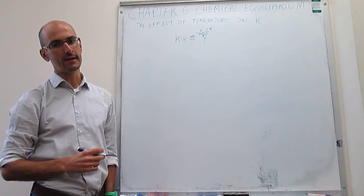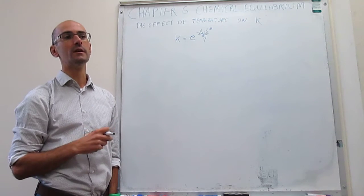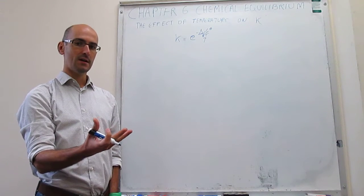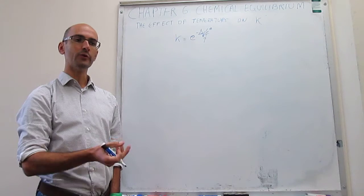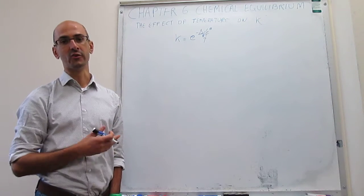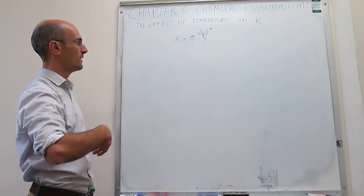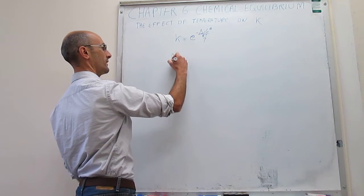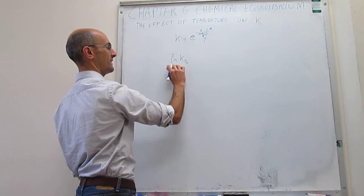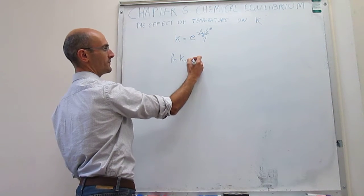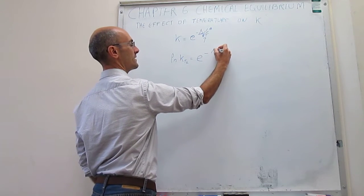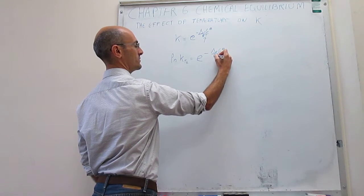We're going to try to come up with an equation that will allow us to predict the value of an equilibrium constant at a temperature of choice, if we know the equilibrium constant at a different temperature, which is usually 298 Kelvin. We can take natural logs of this expression: the natural log of the equilibrium constant at temperature T2 equals minus delta_R G° over R·T2.